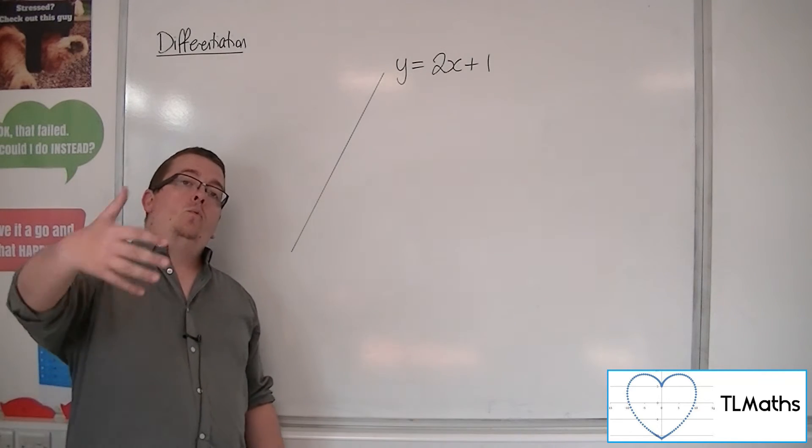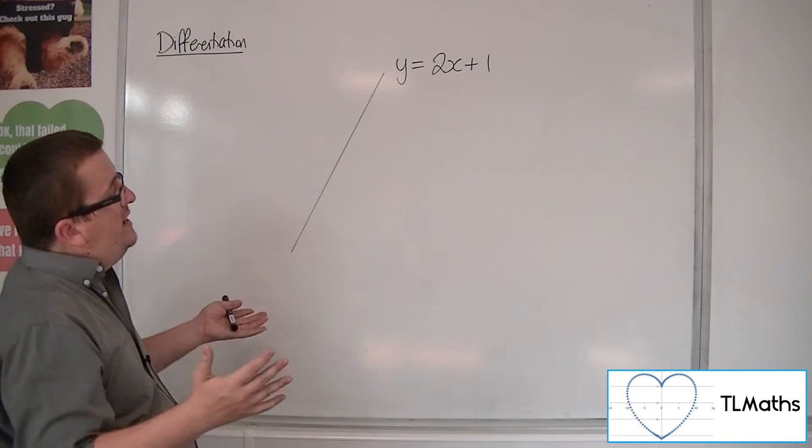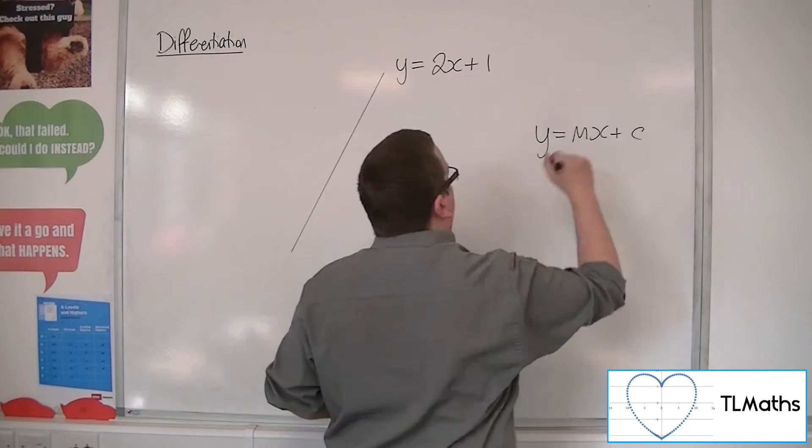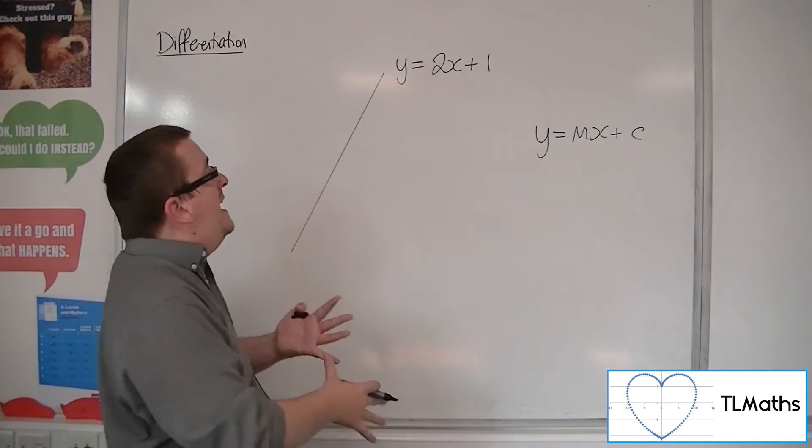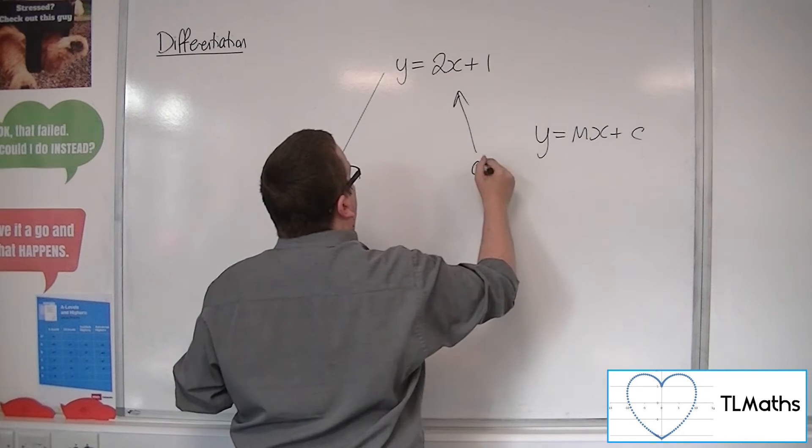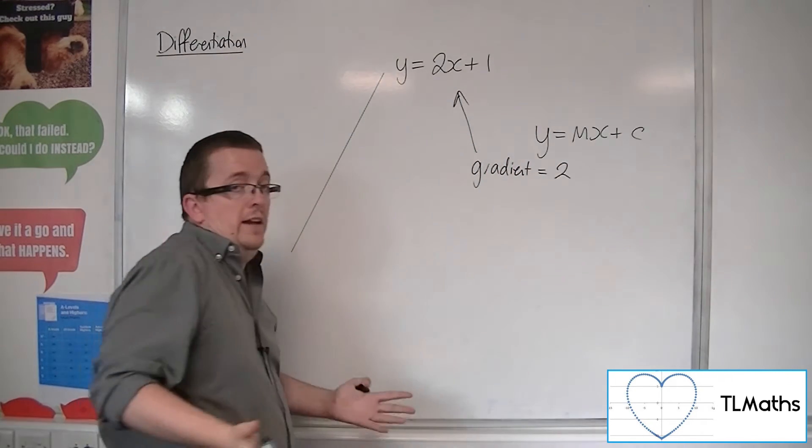Now, we know from our GCSE knowledge that we can read off the equation of a straight line, given in the form y equals mx plus c, we can read off the gradient as m. So I can say here that the gradient of this line is equal to 2. I can read that off.